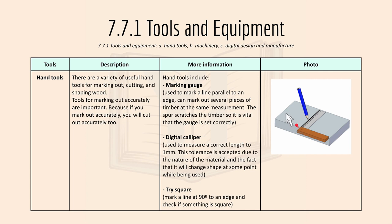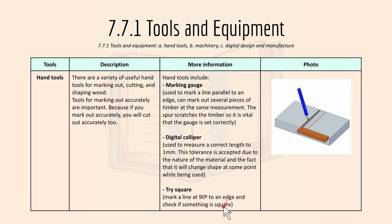Moving on to 7.7.1 tools and equipment. First we have hand tools, and there are a variety of useful hand tools for marking out, cutting and shaping wood, which includes marking gauge, digital caliper, and trisquare. This photo over here shows a piece of material, a pencil, and a trisquare.